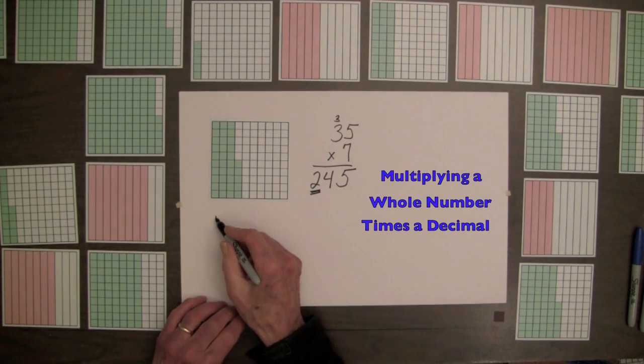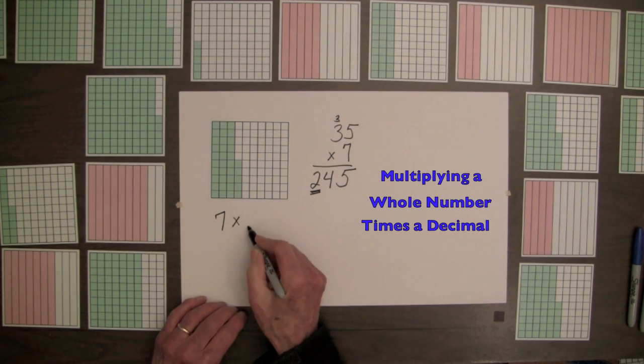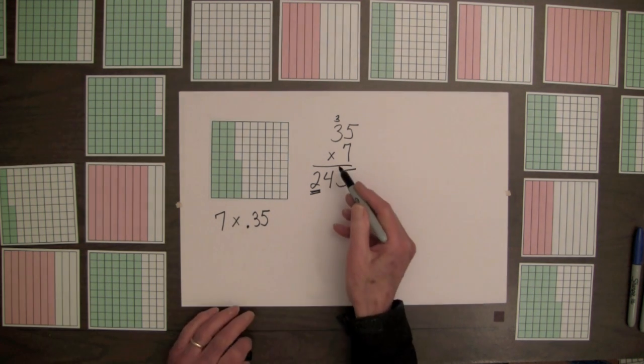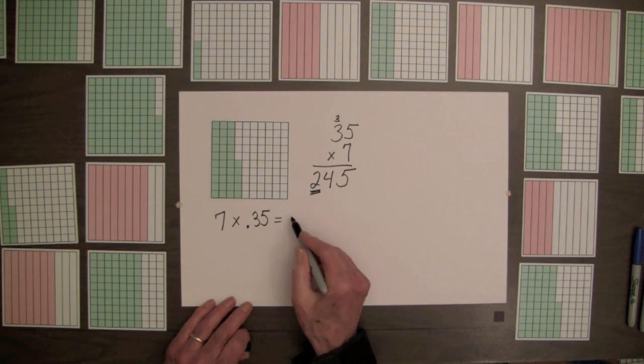Then ask students to write the decimal for their square and compute 7 times the decimal. For example, 7 times 35 hundredths means 7 of the 35 hundredths. In other words, it's repeated addition. And for multiplying by whole numbers, we know the product is 2 and 45 hundredths.